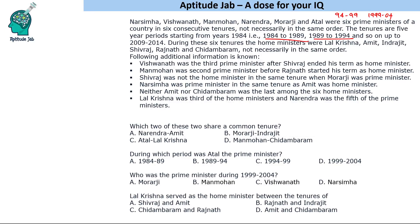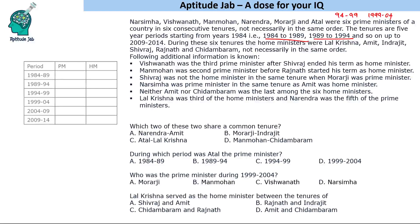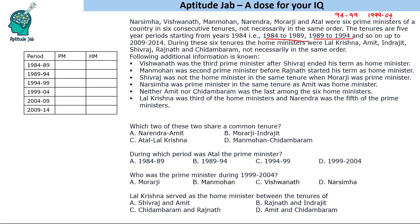Looking at the statements: Vishwanath was the third prime minister after Shivaraj ended his term as home minister — so we don't know when Shivaraj served. Manmohan was the second prime minister before Rajanath started — so we don't know Rajanath's term yet. Shivaraj was not the home minister in the same tenure as Murarji. The key fixed-position clue is that Lal Krishna was the third home minister, meaning the tenure 94 to 99. And Narendra was the fifth prime minister.